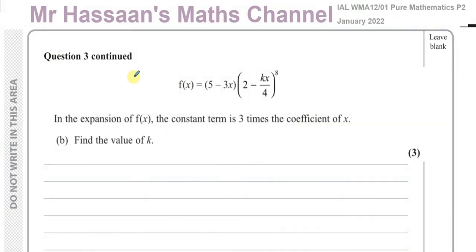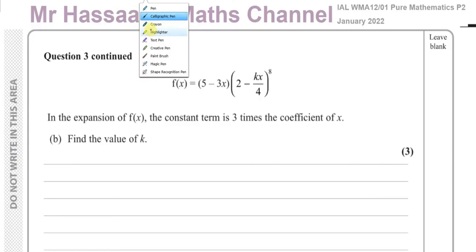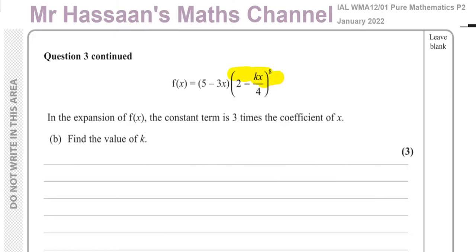Now for part b of question three. We're given the function f(x) = (5 minus 3x) times (2 minus kx over 4) to the power of 8. This part of it is exactly the same as what we just expanded in the previous part of the question.